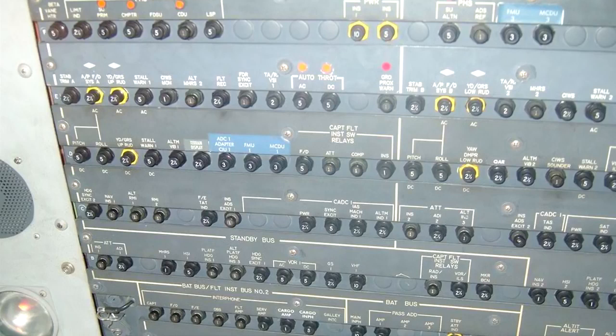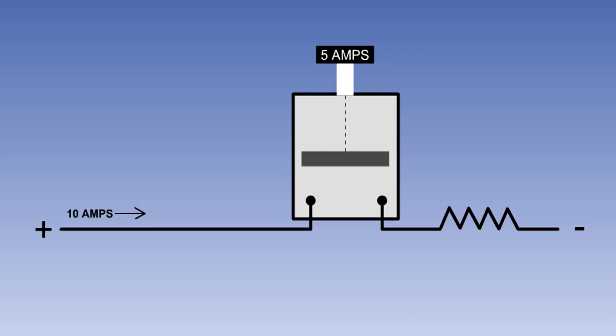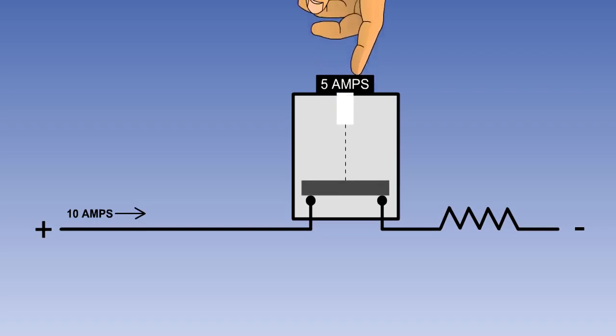These circuit breakers fall into two groups, known as trip-free and non-trip-free circuit breakers. If a non-trip-free circuit breaker is held in by the pilot under fault conditions, the circuit will be made. This is clearly dangerous.